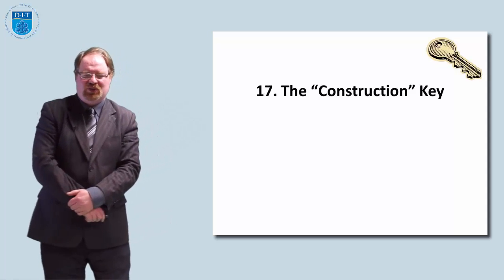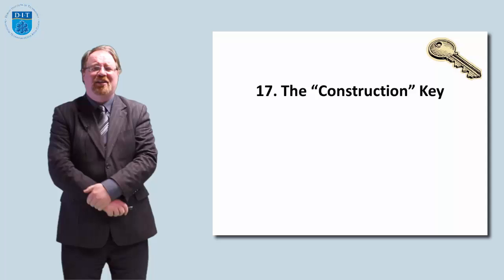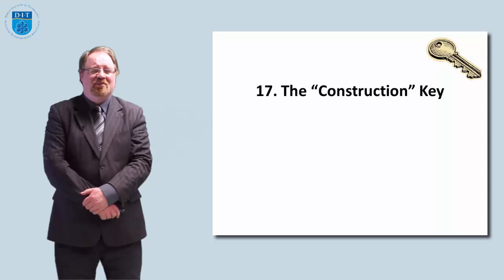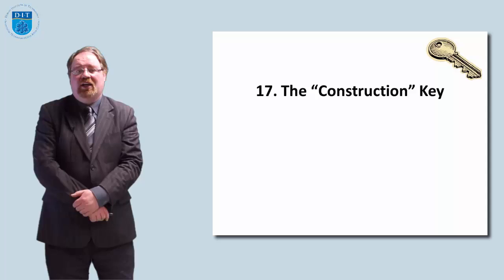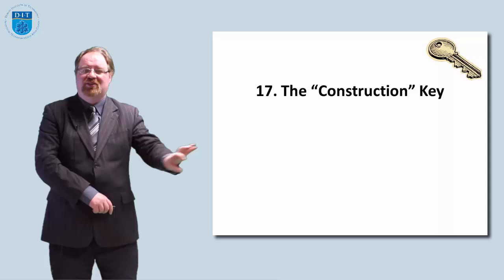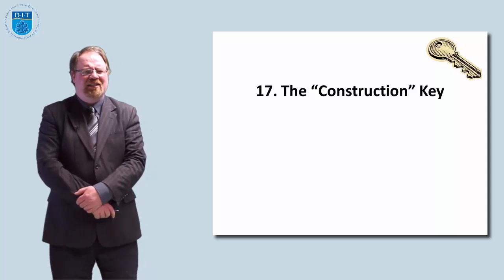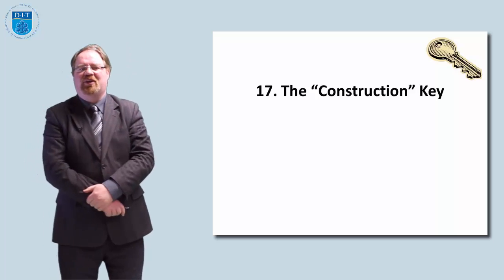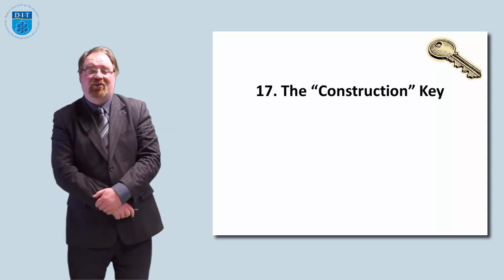Number 17 is the construction key — to build something. It's very good for students to get their hands dirty and build something. We might take random items like sellotape, paper, and drinking straws. A common exercise is to build a container that will hold an egg so you can throw it out a window and the egg won't break. There's also the spaghetti tower challenge: use uncooked spaghetti to build a tower and hold a marshmallow on top, using sellotape so it won't fall down.